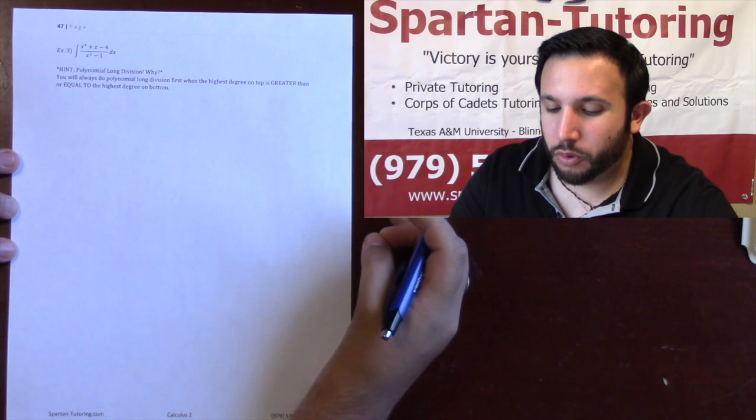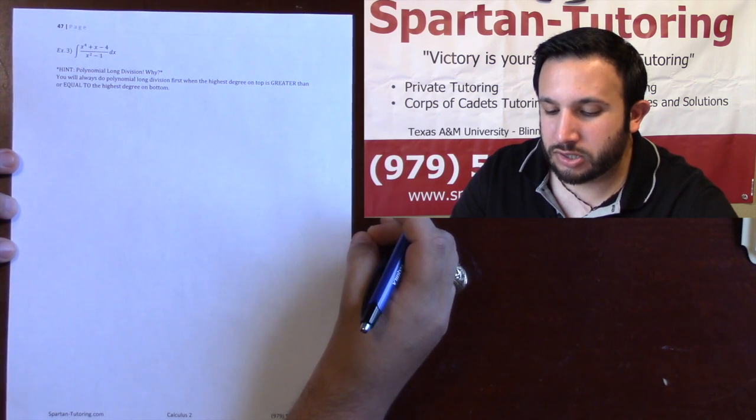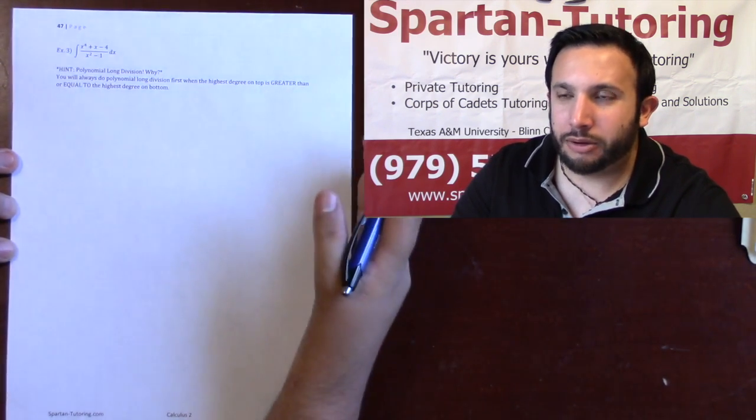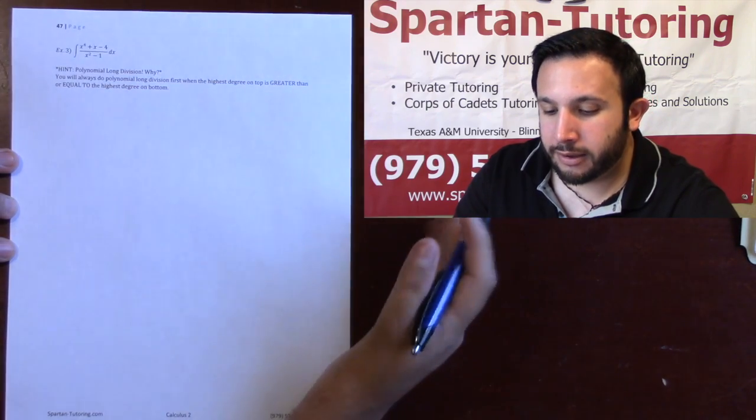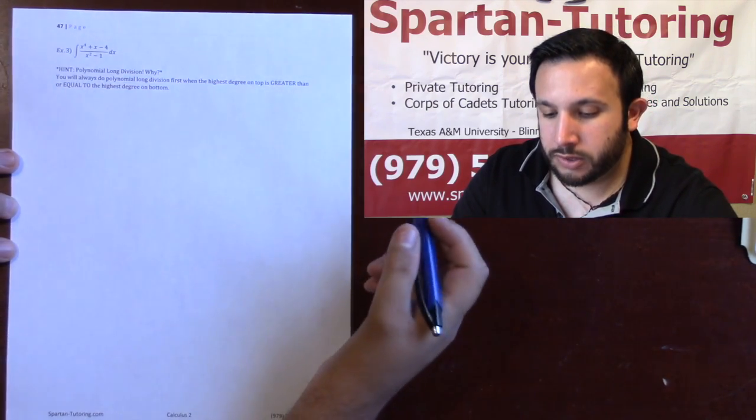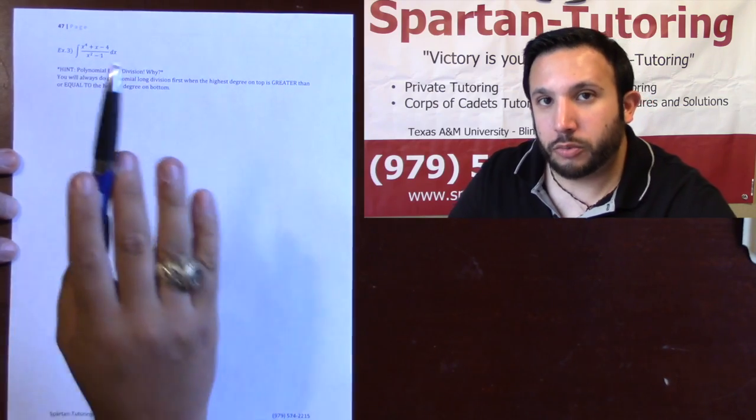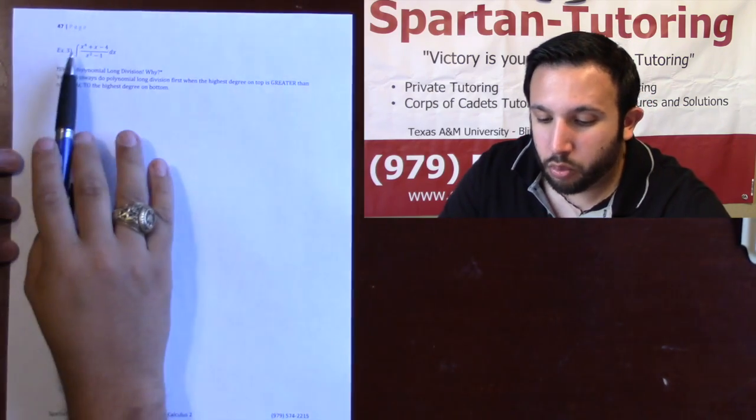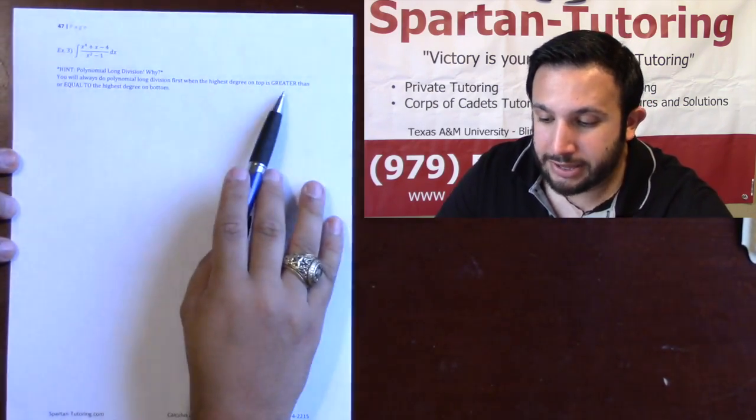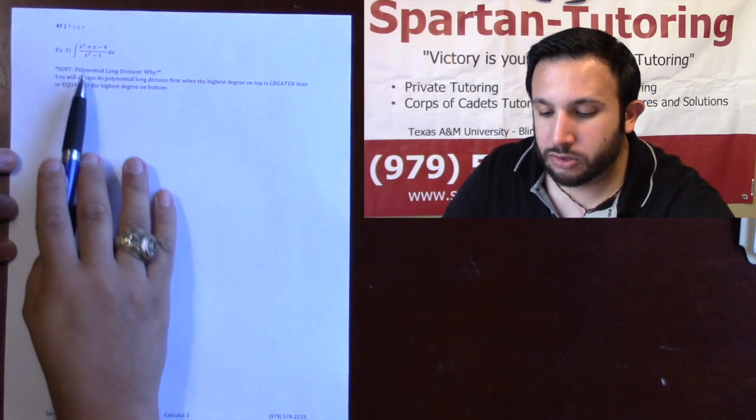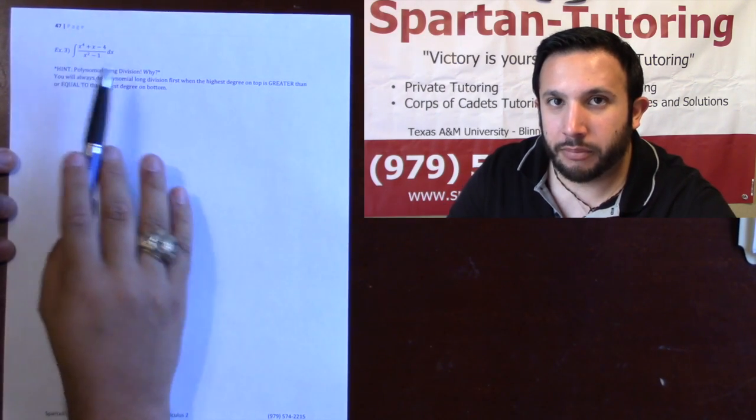Howdy. For part 4 of Partial Fraction Decomposition, let's talk about how, when, and why to do polynomial long division. You will do polynomial long division every time when the highest degree on top is greater than or equal to the highest degree on bottom.